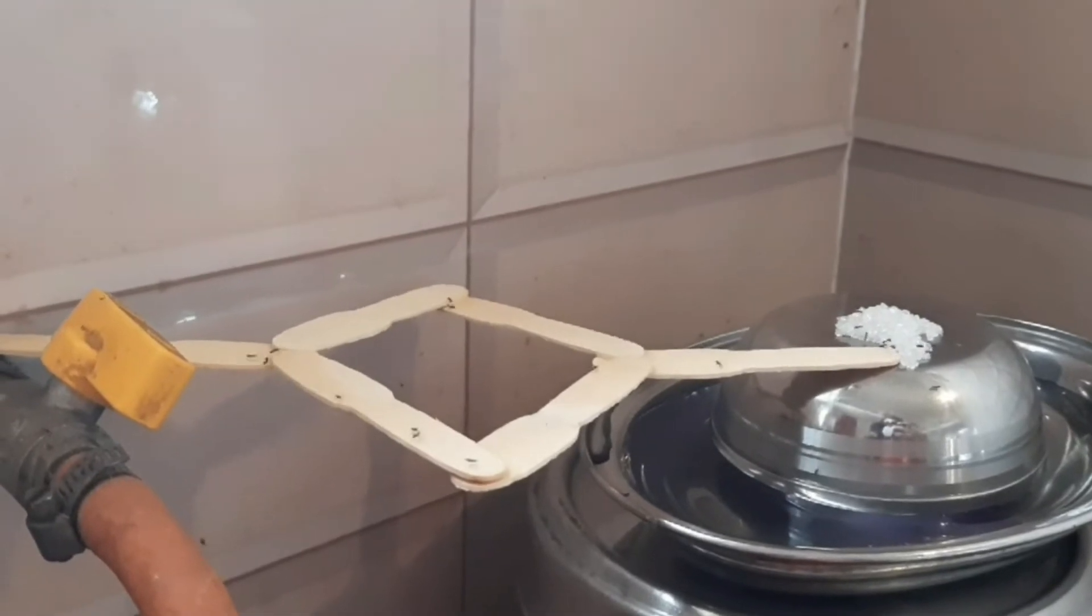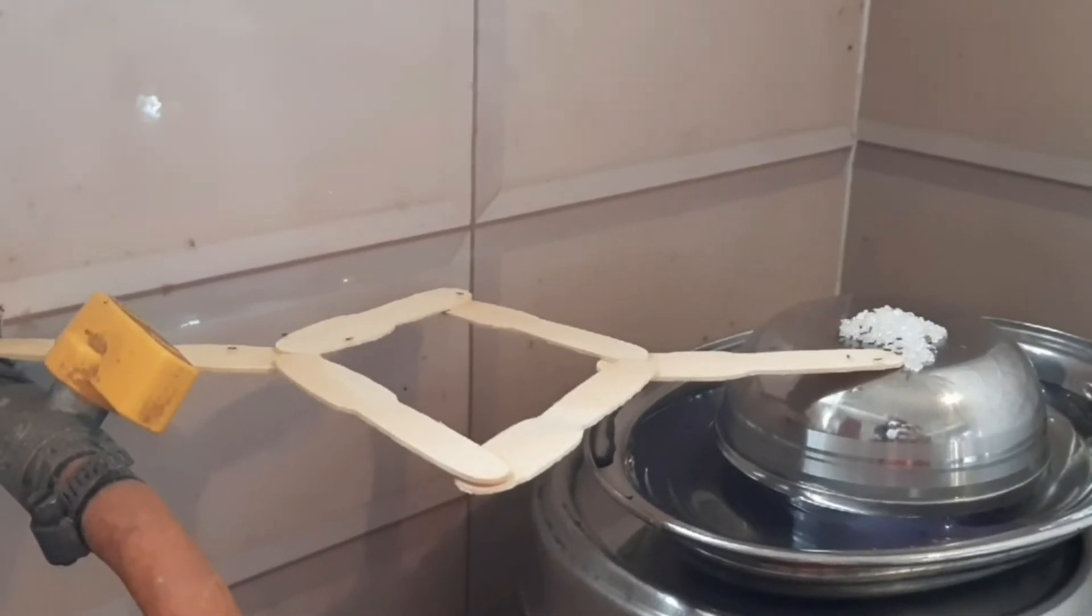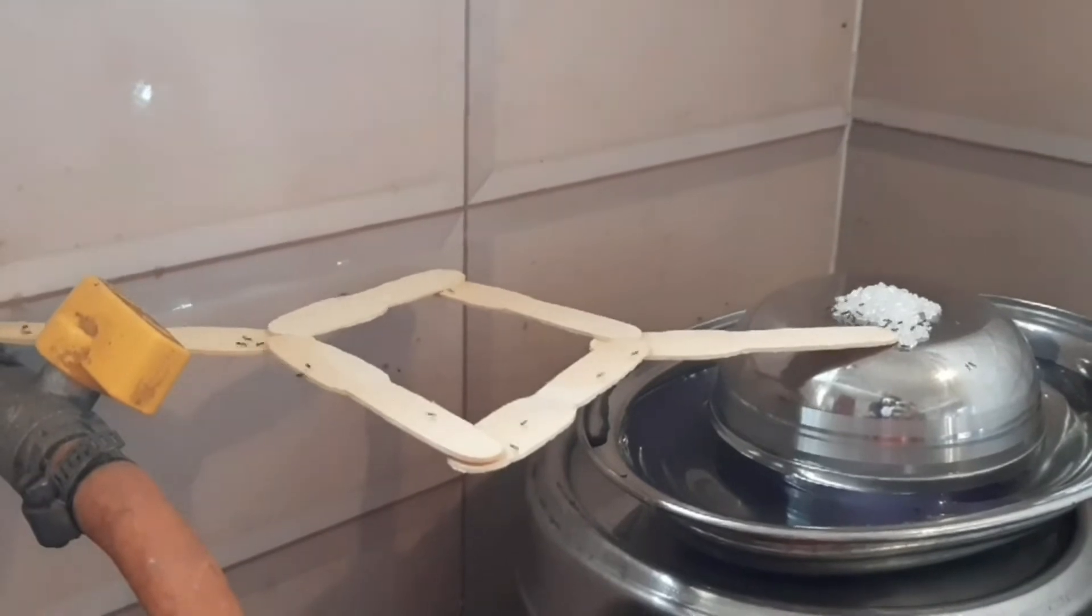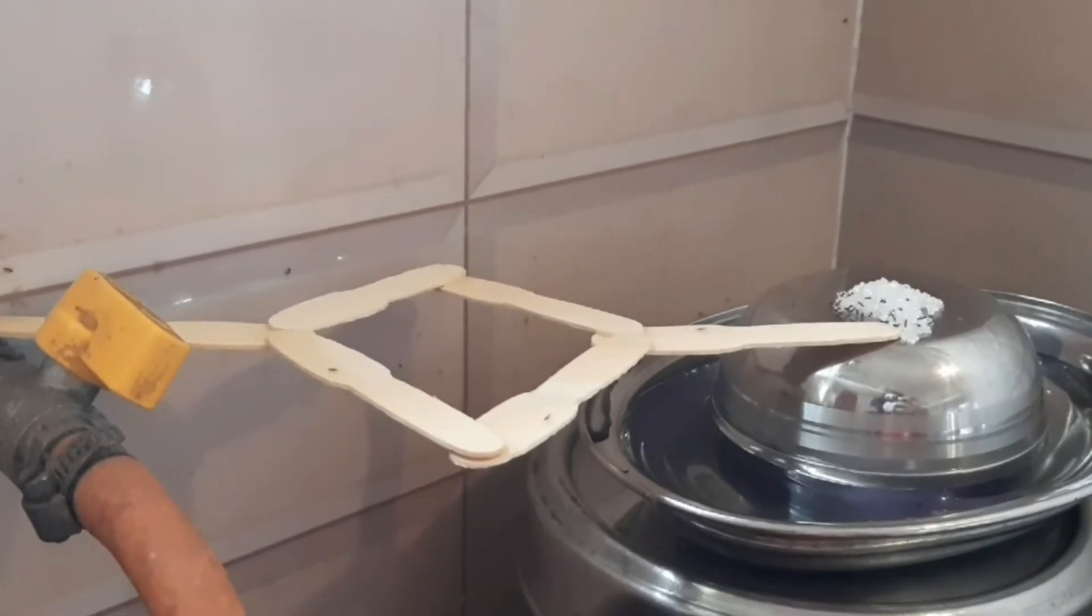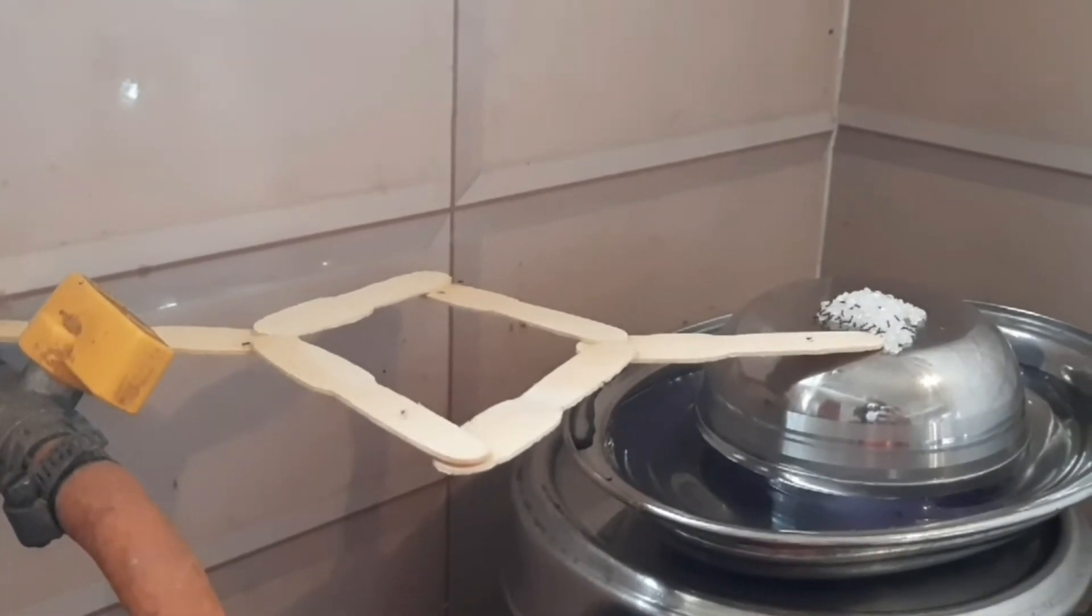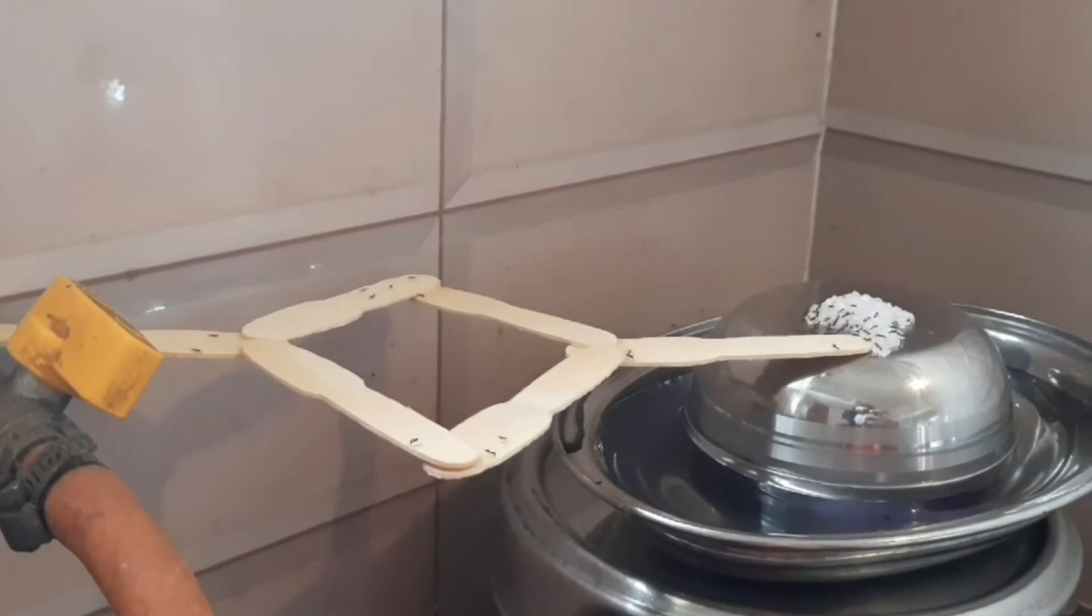Here you can see the setup of the double bridge experiment. It contains a binary bridge connecting a nest of ants and a food source. The bridge here has two branches of equal lengths converging at the food source.